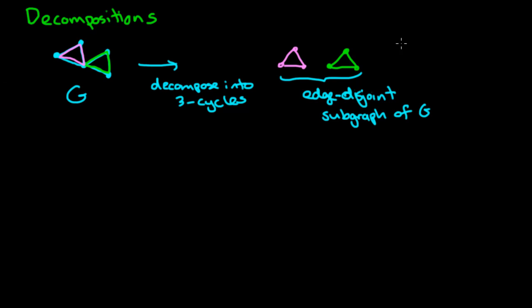But if you take a look at maybe this one — if I have a three-cycle like this and a four-cycle like this, if I break this graph into a three-cycle and a four-cycle, it's still a decomposition into two cycles, it's just not necessarily the same cycle. So that's also a possibility.